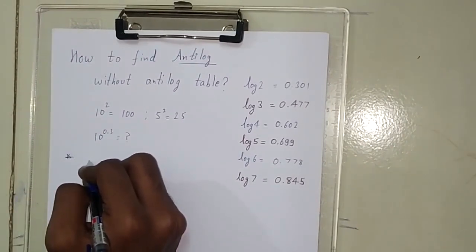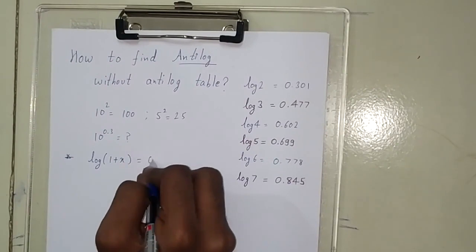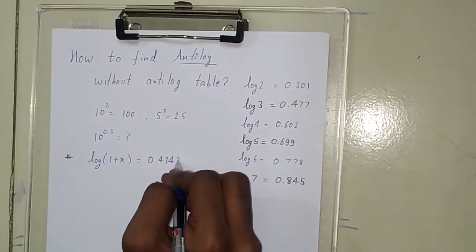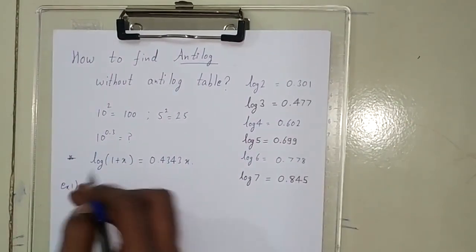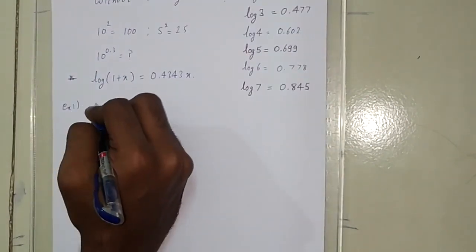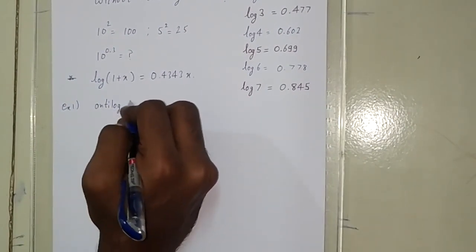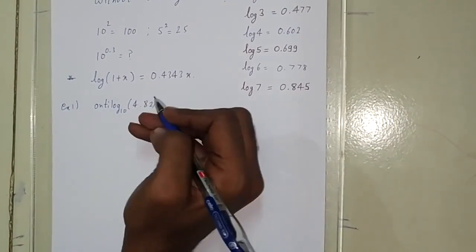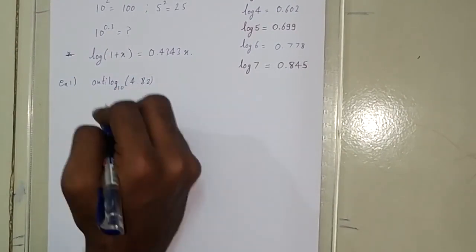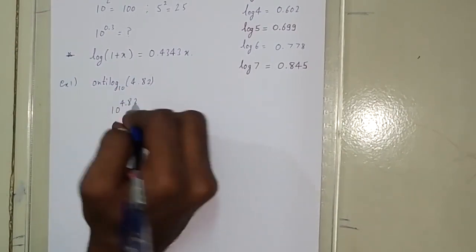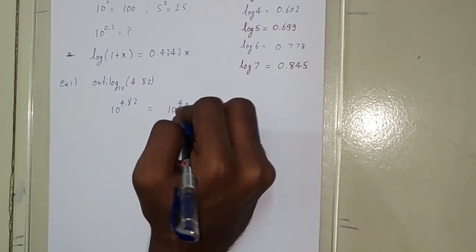The formula says log(1 + x) equals 0.4343x. Let's see how it works with an example. We'll be finding antilog of 4.82. You can write this as 10 to the power 4.82, which can be written as 4 plus 0.82.